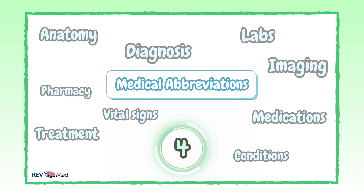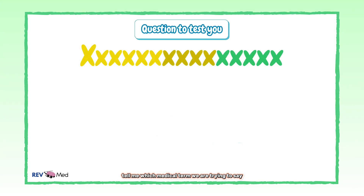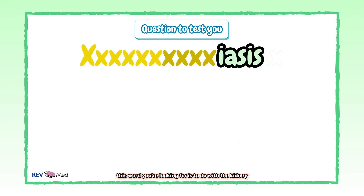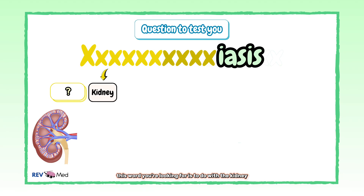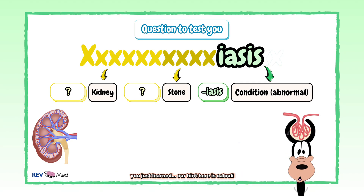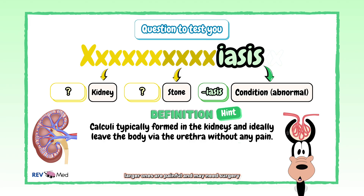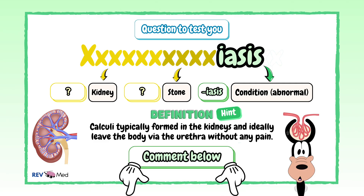Also stay tuned for a lesson on medical abbreviations — it's coming soon. Here's a question to send you off: tell me which medical term we are trying to say. We're looking for two real words that are connected, and the suffix is "-iasis". This word is to do with the kidney, and you're looking for a word for stone. The hint is: calculi typically formed in the kidneys ideally leave the body via the urethra without any pain; larger ones are painful and may need surgery. Let's hear your answer to the medical term in the comments below.